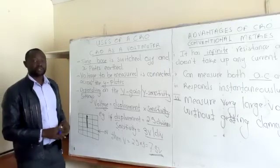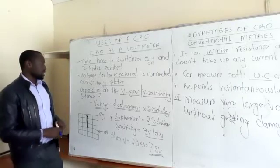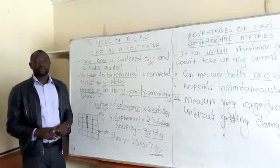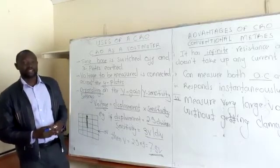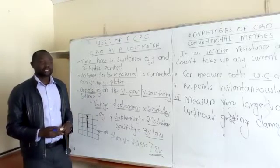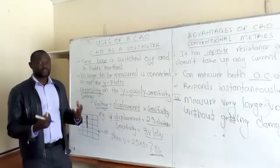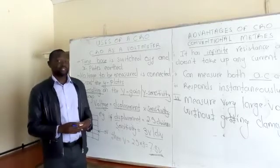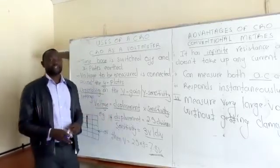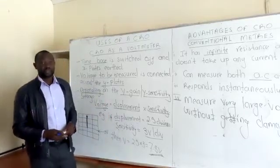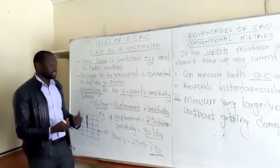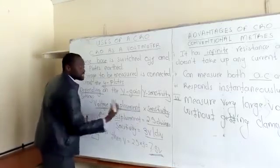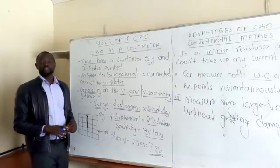Finally, we need to set the Y gain sensitivity — remember the Y sensitivity is set in voltage per division. Then we need to check how many divisions of displacement have been caused by this voltage.